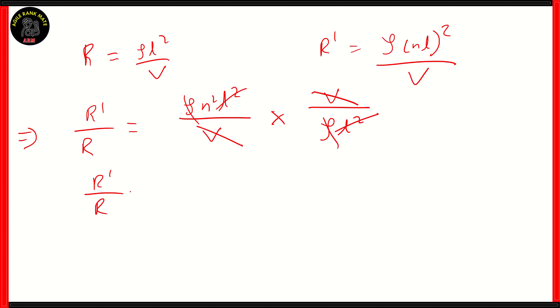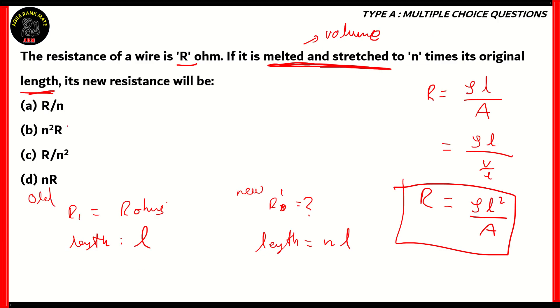So, R'/R is N². So, therefore, the new resistance will be N² times the old resistance. So, R' = N²R is the correct answer.